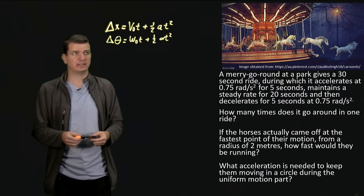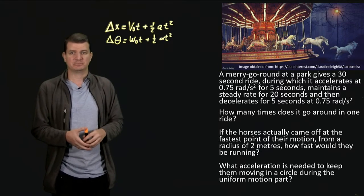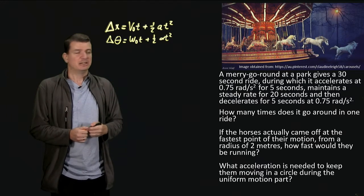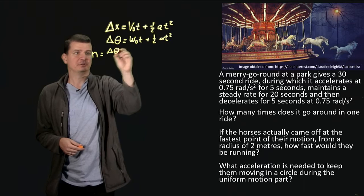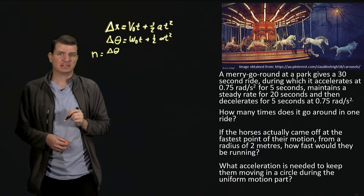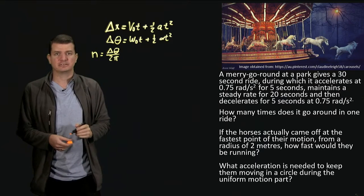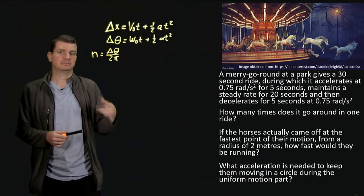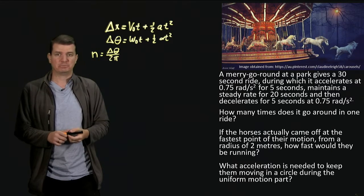With these things in mind, we can almost already answer the first question: how many times does it go around? If we know the total angle we've gone through, and every single time around corresponds to 360 degrees — which is 2π radians — then we can write that n equals the total angular displacement divided by 2π radians per revolution. So n will be the number of times around. That's our plan of attack.